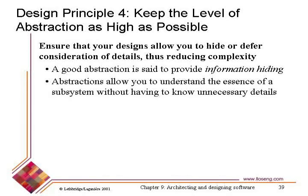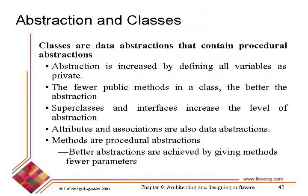Abstraction allows us to think in terms of the abstraction without worrying about the details underneath it — this is called information hiding. As users of the abstraction, we don't have to worry about the implementation. Using an interface, I don't have to worry about the implementation; using a superclass, I only have to worry about the methods available in that superclass. Using a class to manage data, I just have to know the data is being managed for me. Slide 40 provides a review of the different kinds of abstractions associated with classes in object-oriented context.